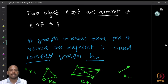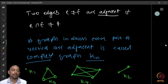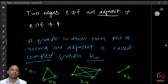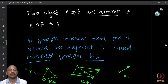Two distinct edges are said to be adjacent if they have a non-empty intersection — that is, if they have at least one common vertex. For simple graphs, if two distinct edges are not adjacent their intersection is empty; otherwise it will have exactly one element. When we talk about other types of graphs, not necessarily simple graphs, we may come across cases where the endpoints of two edges could be the same, but we will not discuss that in this course.